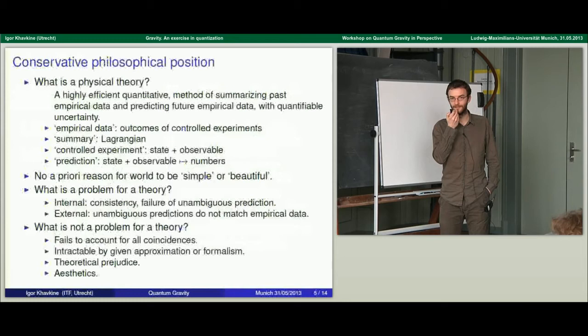There's also failure of producing unambiguous predictions: if you define states, observables, and dynamics, but still cannot construct the pairing that gives numbers, that's a failure of unambiguous predictions. Sadly, the quantum field theories that we work with actually do have this problem, precisely because they are perturbative and produce formal power series rather than actual numbers. There could also be external problems: if we had unambiguous predictions of controlled experiments and they did not match empirical data, then we would know the theory is wrong and have to look for a better one.